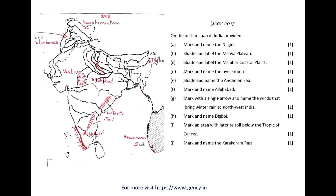Year 2015. On the outline map of India provided: A. Mark and name the Nilgiris. B. Shade and label the Malwa Plateau. C. Shade and label the Malabar Coastal Plains. D. Mark and name the River Gomti. E. Shade and name the Andaman Sea. F. Mark and name Allahabad. G. Mark with a single arrow and name the winds that bring winter rain to northwest India. H. Mark and name Digboi. I. Mark an area with laterite soil below the Tropic of Cancer. J. Mark and name the Karakoram Pass.